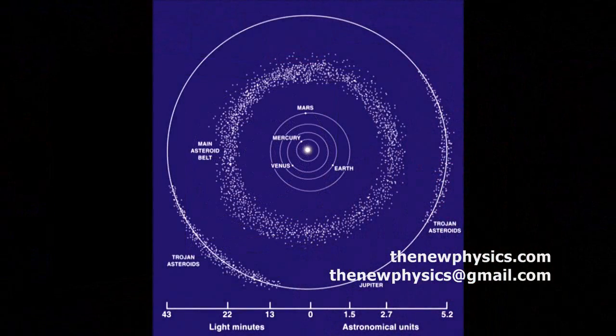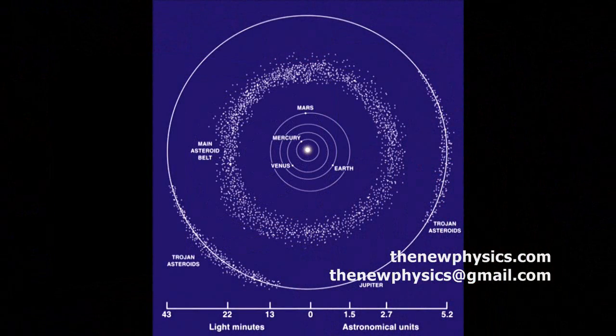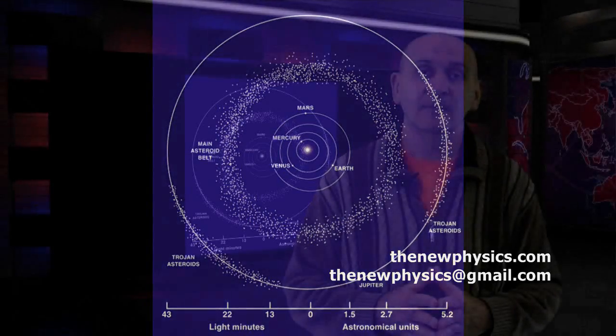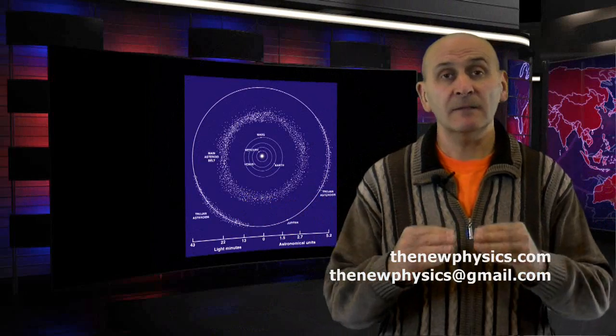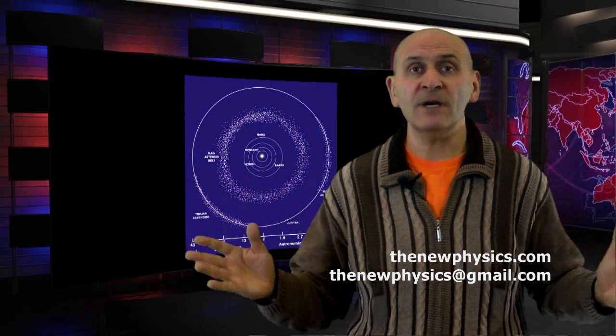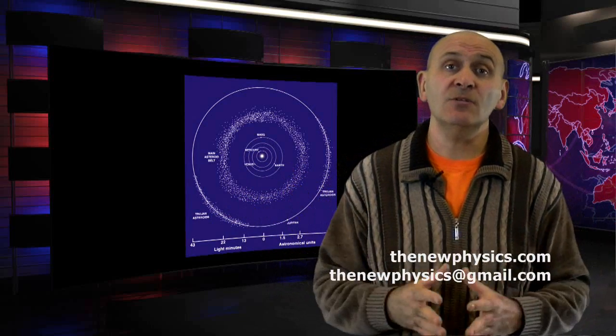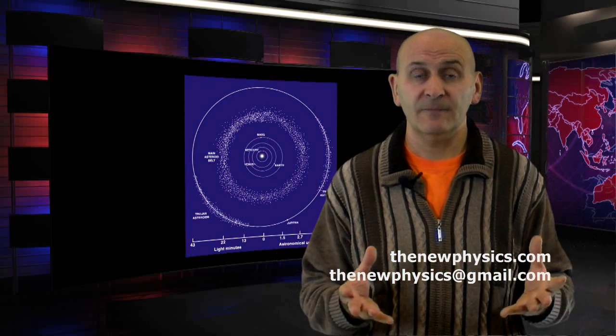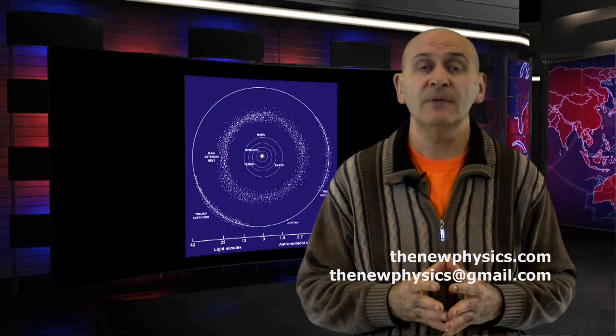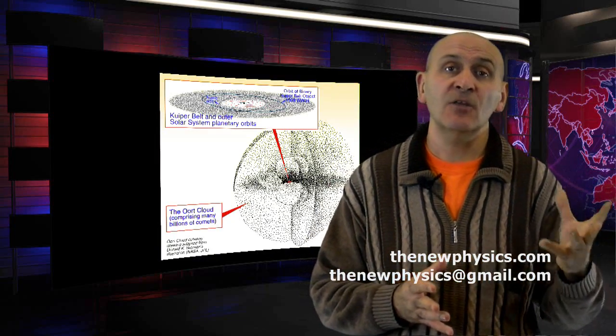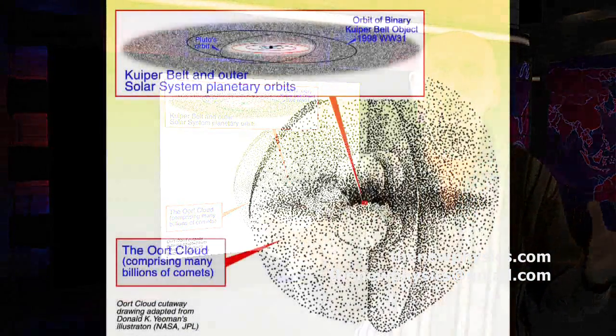But also notice that we have two clouds in orbit of Jupiter. So, rocks are everywhere around. But even when we move further, beyond the orbit of Pluto, we are facing huge asteroid belt, donut shape, which we named Kuiper belt.